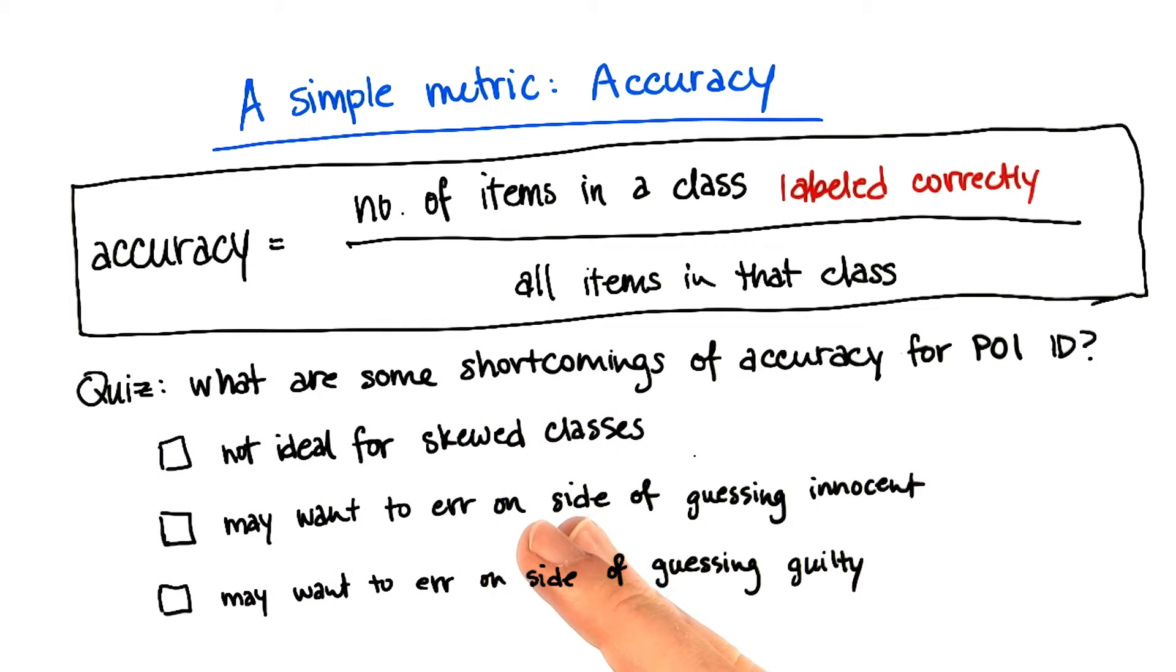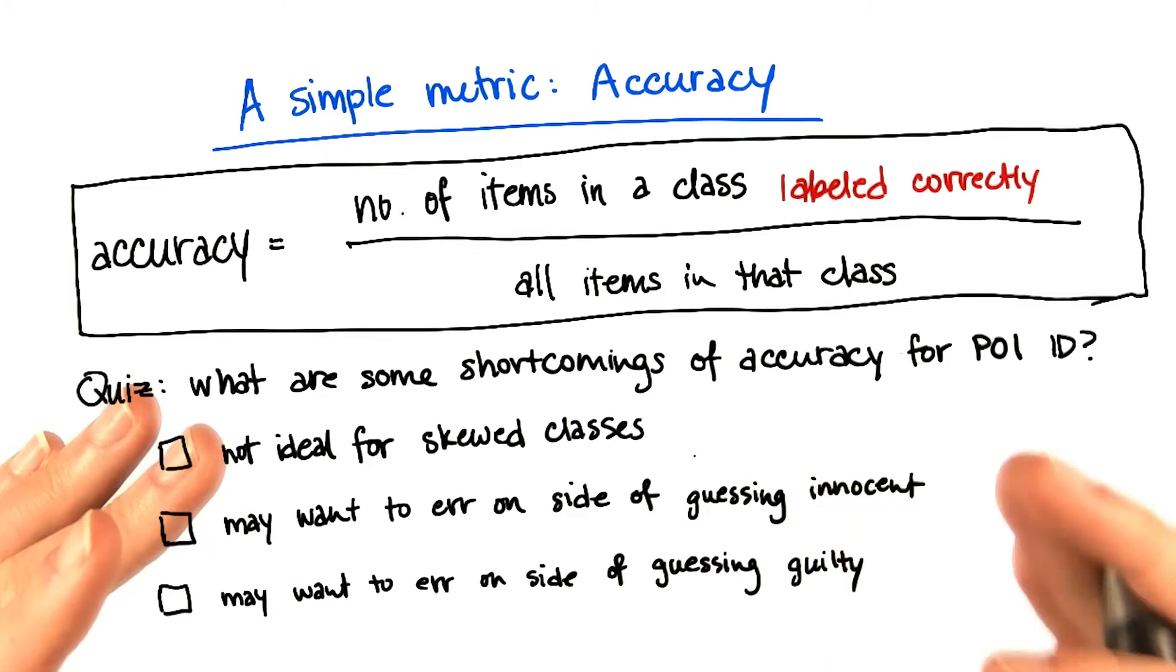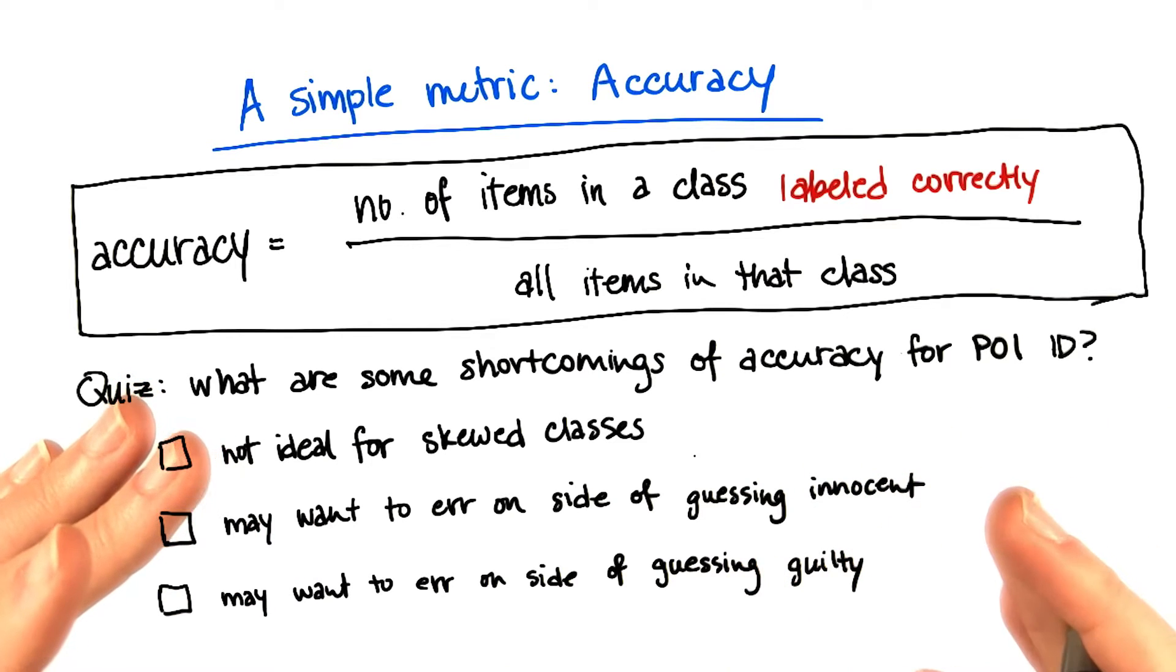This is what's going on with the Enron dataset, because although there were thousands of people who worked at Enron, there were only a few dozen who ended up really being pursued by the law for their involvement in the fraud. So accuracy might not be an ideal metric in that particular case where you have very few examples of one of the classes.